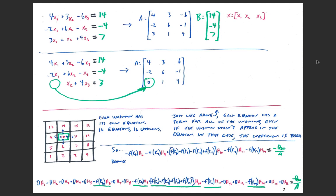This applies also for our main equations for our project. Each unknown has its own equation — every single grid square in your model. I've drawn 16 grid squares here in a 4x4 grid; we're working with a 50x50 grid that's going to have 2,500 grid squares, meaning 2,500 equations for 2,500 unknowns. Each equation has a term for all of the unknowns, even if the unknown does not appear in the equation — in that case the coefficient is zero, and we still need that zero in the A matrix.